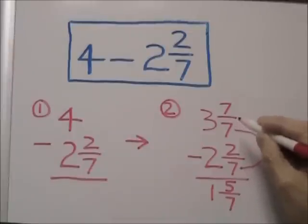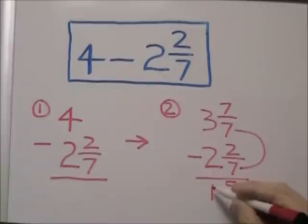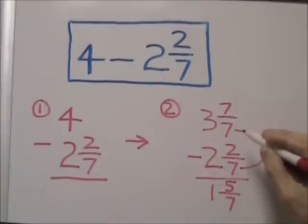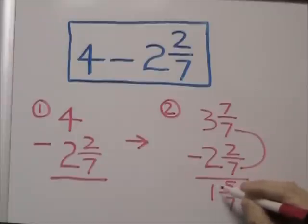So the first thing we're going to do is subtract our whole numbers. Subtracting 2 from 3 gives us 1. We next subtract our numerators. Subtracting 2 from 7 gives us 5. So we now have a final answer of 1 and 5 sevenths.